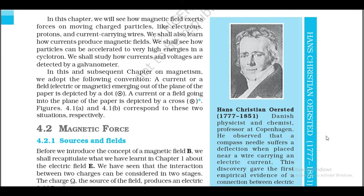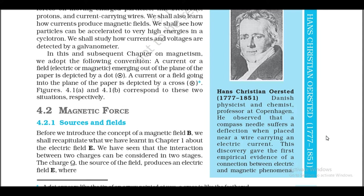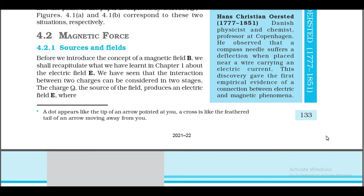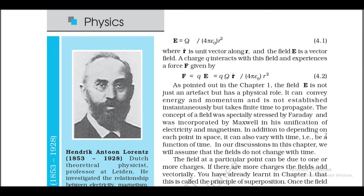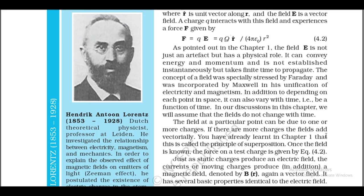Section 4.2: Magnetic Force. Section 4.2.1: Sources and Fields. Before introducing the concept of magnetic field B, we recapitulate what we learned in Chapter 1 about the electric field E. The interaction between two charges can be considered in two stages: the charge q, the source of the field, produces an electric field E = q / (4πε₀r²) r̂. A charge q' interacts with this field and experiences a force F = q'E = qq'r̂ / (4πε₀r²).